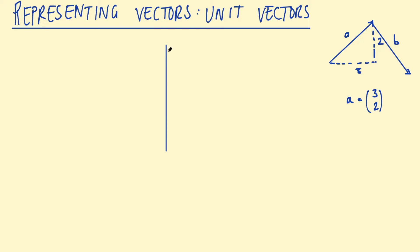A unit vector is just a vector with a magnitude of one. Its size is one unit — that's why we call it a unit vector. There are two special unit vectors that we can use to represent any 2D vector.